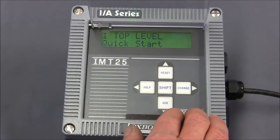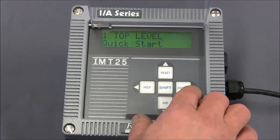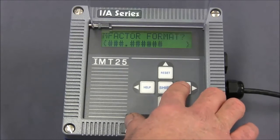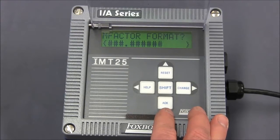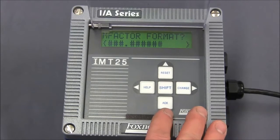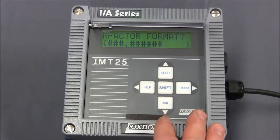Next, we'll enter into the quick start menu by pressing the change key or the right arrow key. The first thing that comes up is the meter factor format. Here, you can change the position of the decimal point depending on the calibration factor that's stamped on your flow tube.